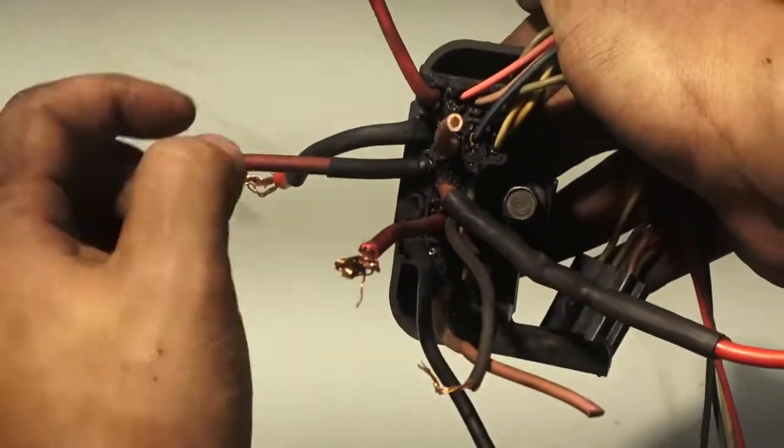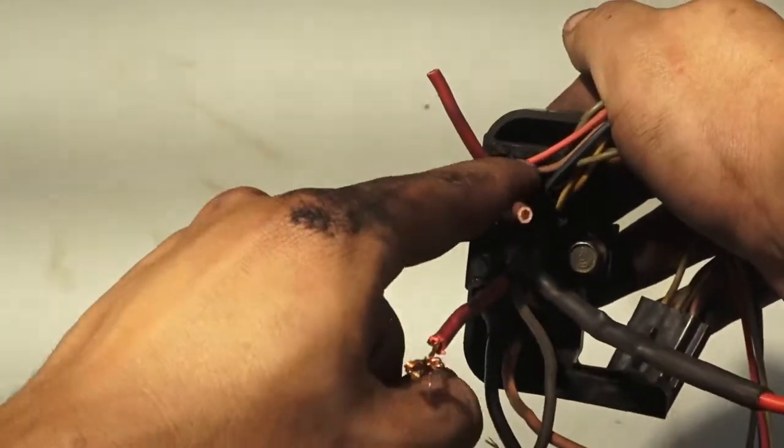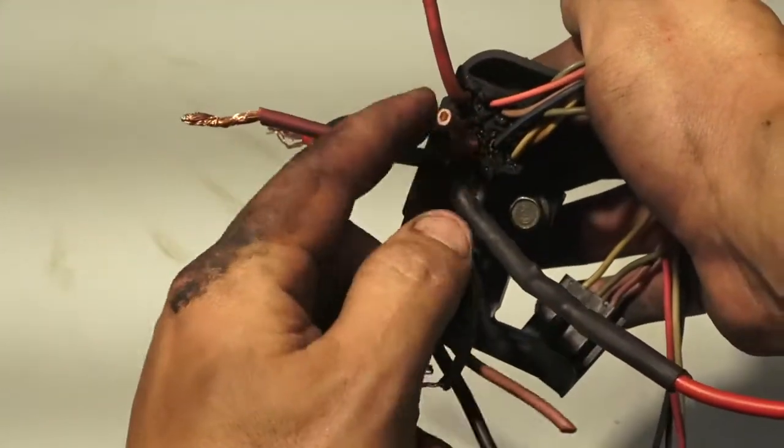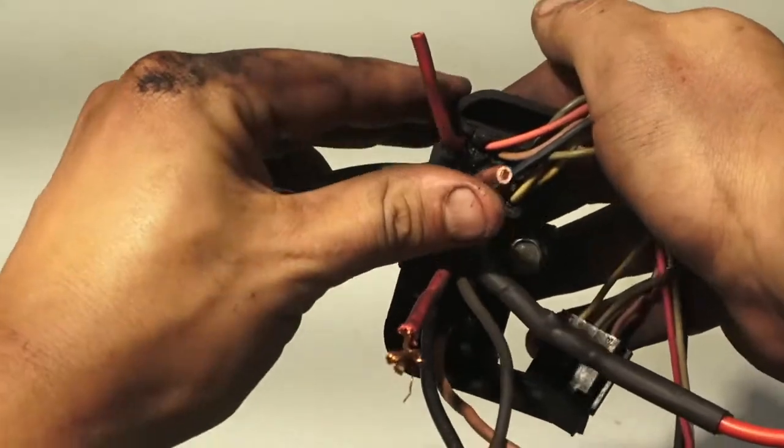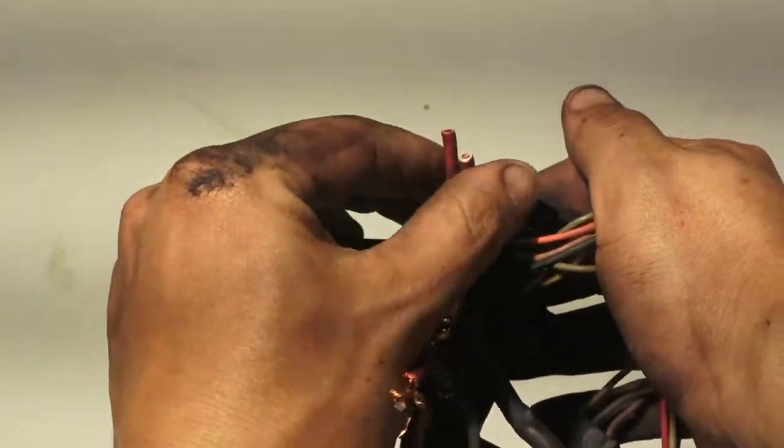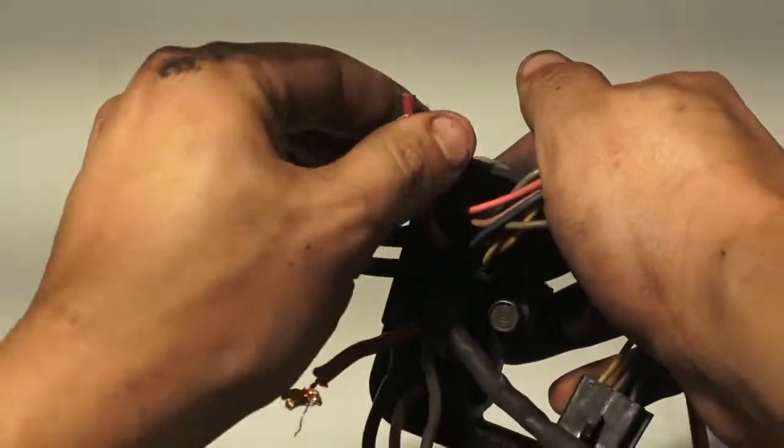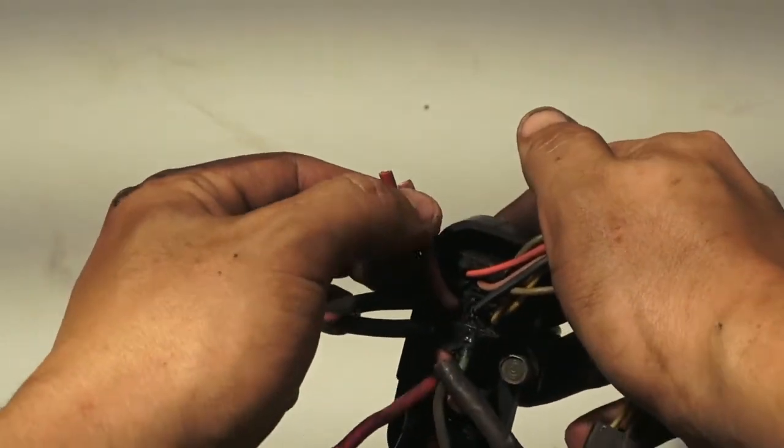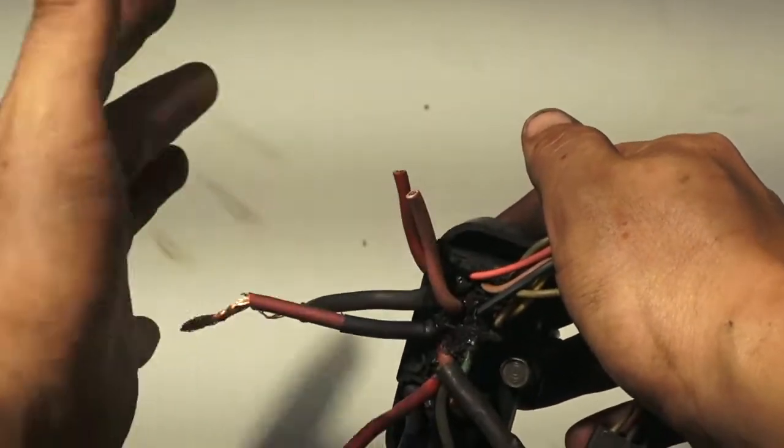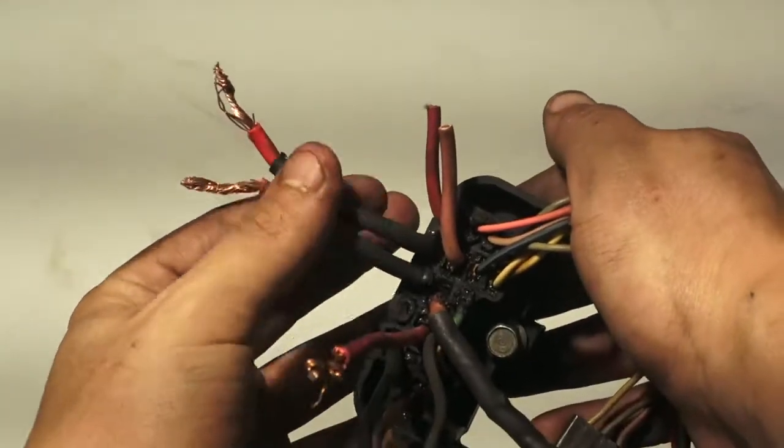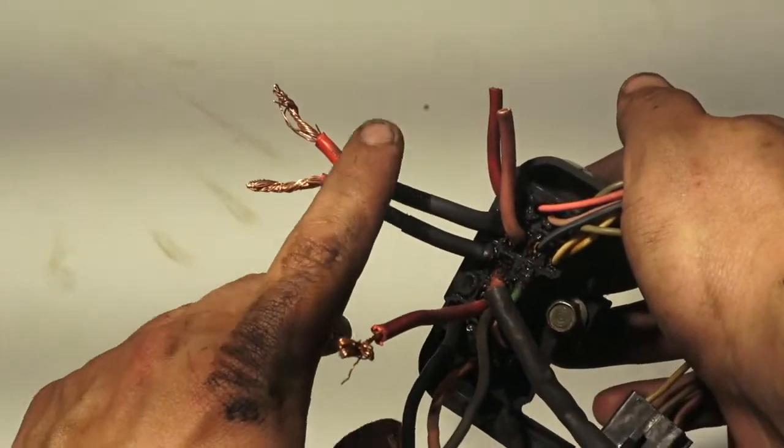Then you go over one column and down, ignore these wires here, over to one column, and you want to go down to this first wire right here. This is going to be your second battery positive. Pretty much these two get wired together from the factory, they have a fusible link.